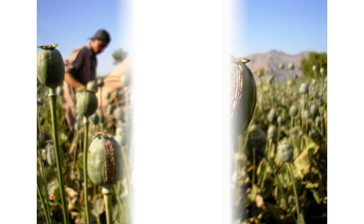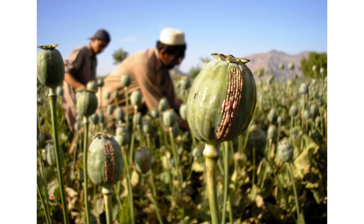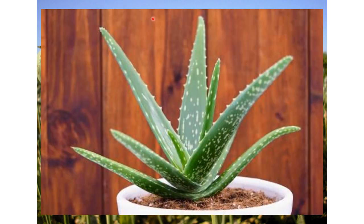We also have medicinal plants whose medicinal properties are derived from their secretions. An example is opium, a dried latex obtained from the seed capsule of the opium poppy, scientifically known as Papaver somniferum. Approximately 12% of opium is made up of the analgesic alkaloid morphine. We also have the aloe vera plant as another example.